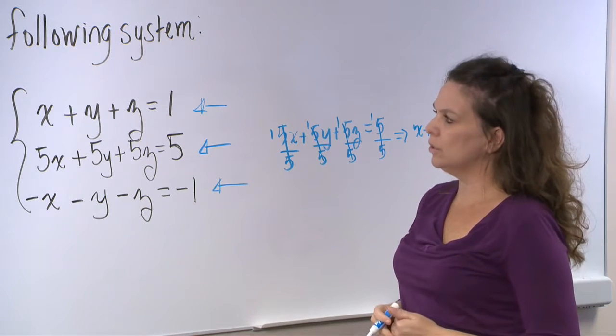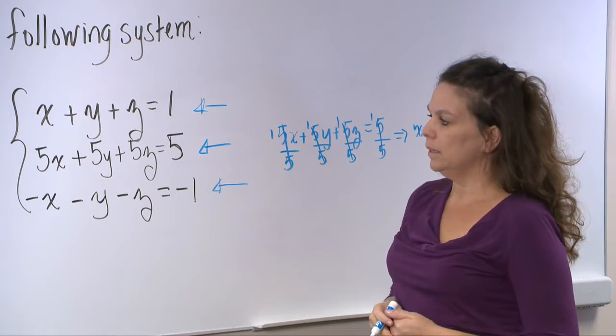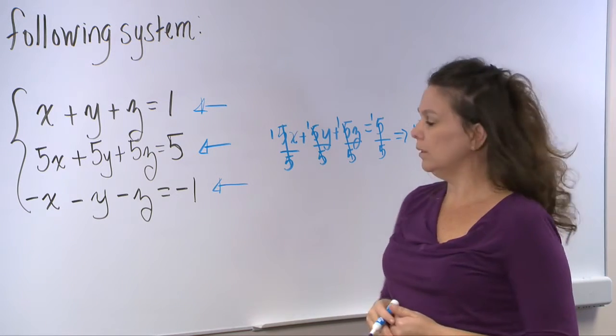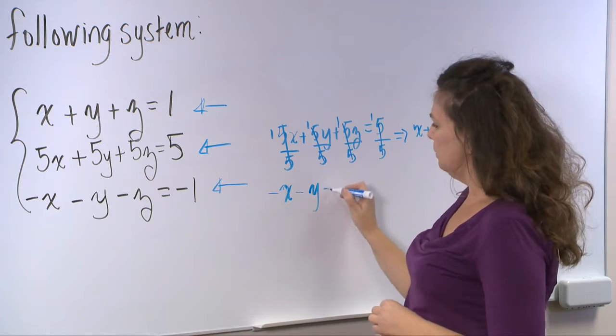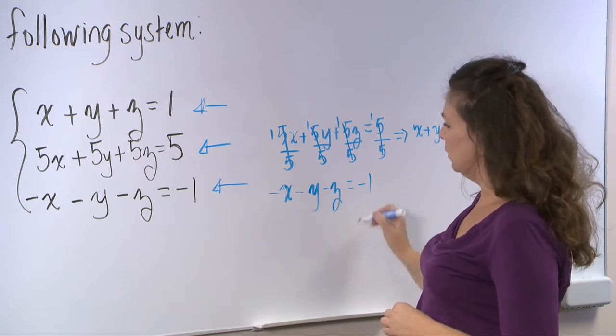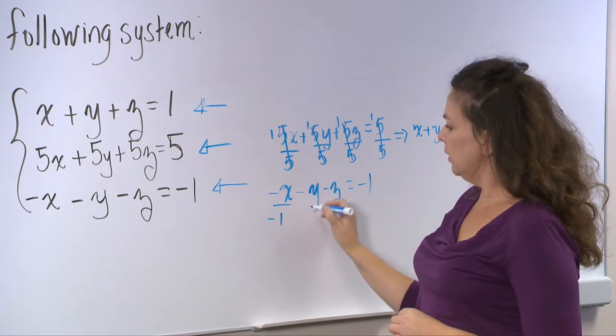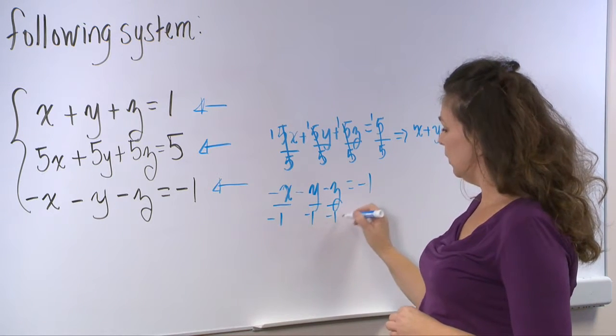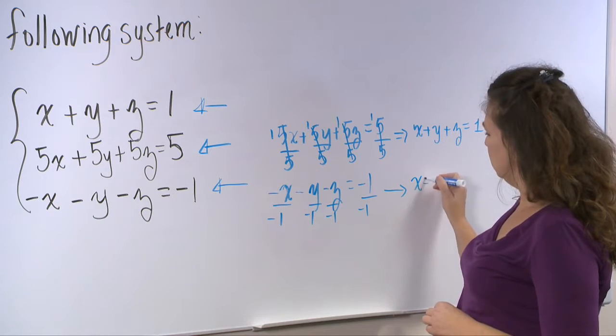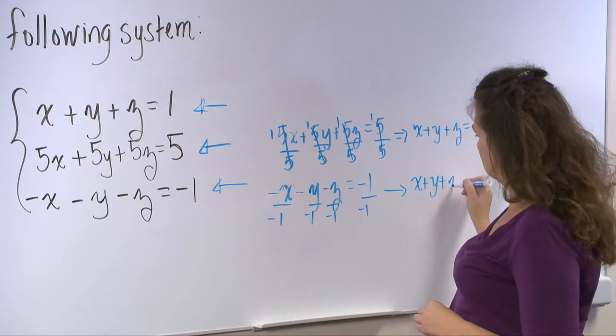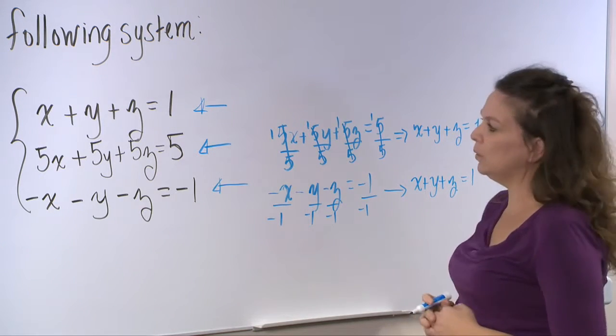In a similar manner, if I take the third equation, which is negative x minus y minus z is equal to negative 1, and I divide through by a negative 1, then I end up with x plus y plus z is equal to 1.